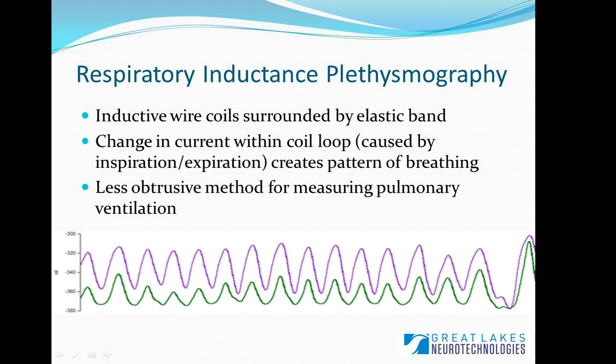The type of respiratory measure I'm going to focus on today is called respiratory inductance plasmography, or RIP. RIP is a type of respiratory effort band worn completely around the body at the thorax and abdomen. There's an elastic band with inductive wire coils within it. A current is delivered to those coils, and as the current within those loops changes — caused by inspiration, expiration, and movement of the chest and abdomen — this creates a pattern of breathing, producing the standard sinusoidal waveform you might see in a healthy subject.